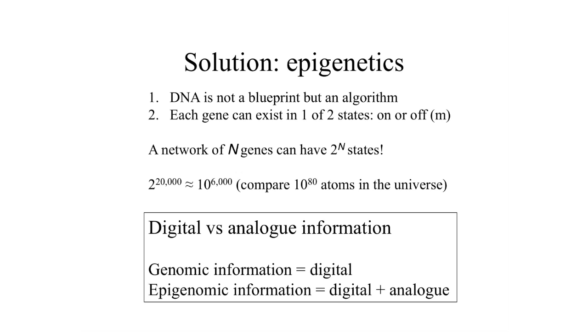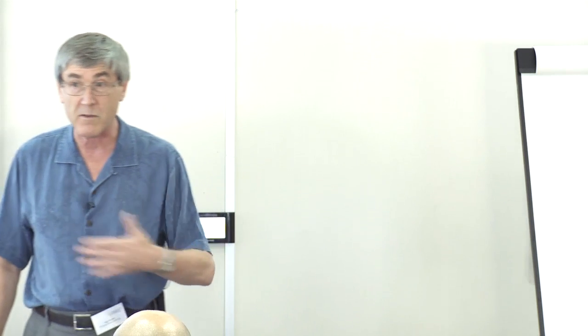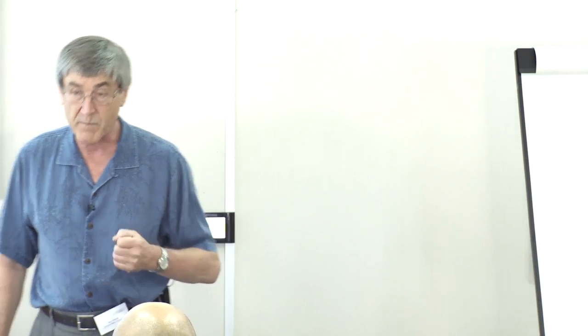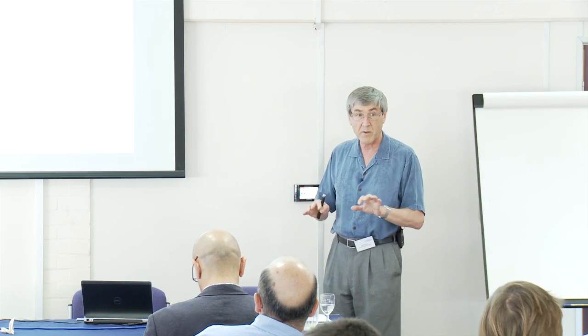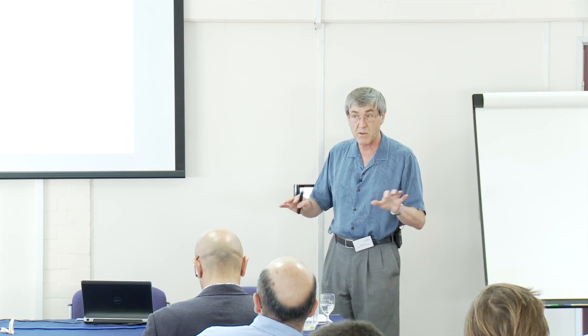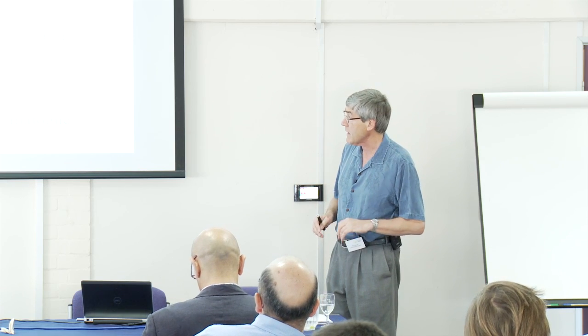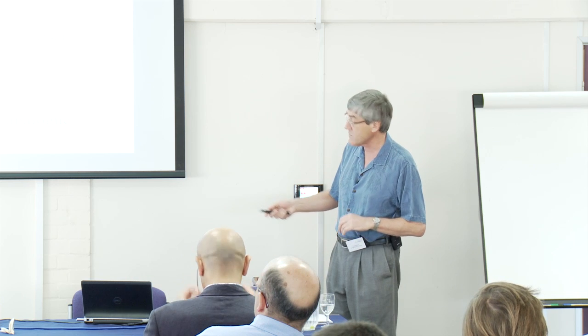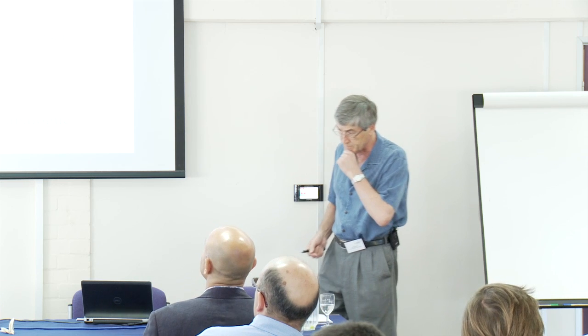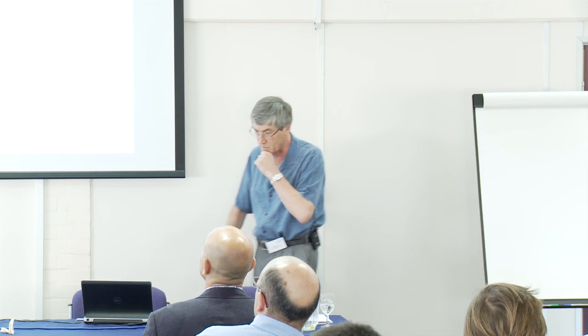How can epigenetic information be analog? It might involve chemical gradients or chemical concentrations, which are continuous variables. So it isn't all a digital process — epigenetics has a large analog feature to it as well.